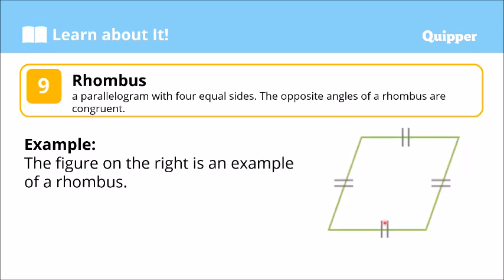Another classification of a quadrilateral is what we call the rhombus. Four sides — so it's a quadrilateral. It's a parallelogram since two pairs of opposite sides are parallel. And it has four equal sides. What makes it different is that all four sides are equal — lahat ng sides niya ay equal. That's rhombus.